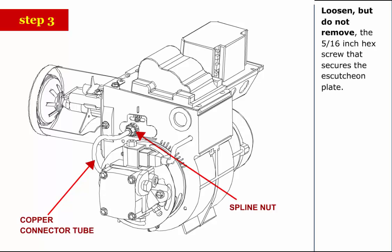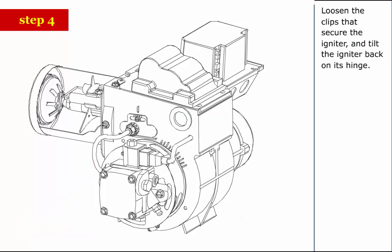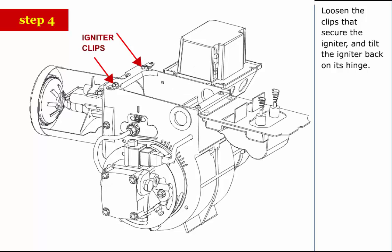Step 3: Loosen but do not remove the 5 sixteenths inch hex screw that secures the escutcheon plate. Step 4: Loosen the clips that secure the igniter and tilt the igniter back on its hinge.